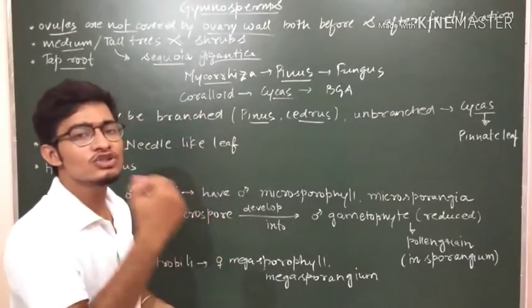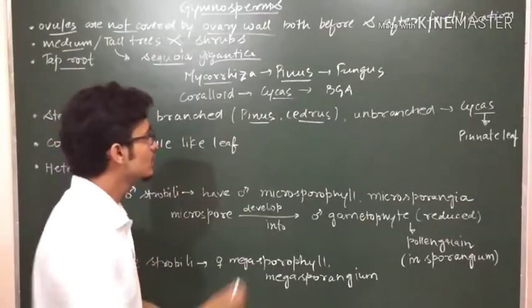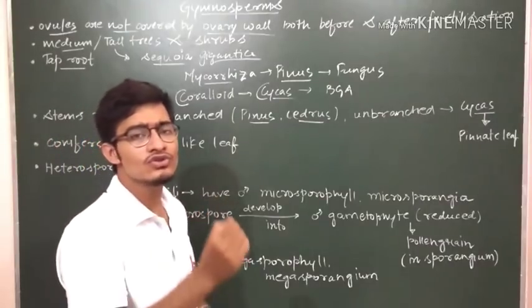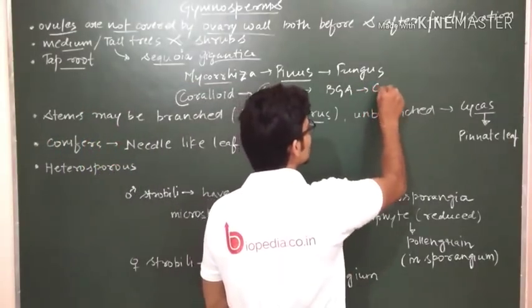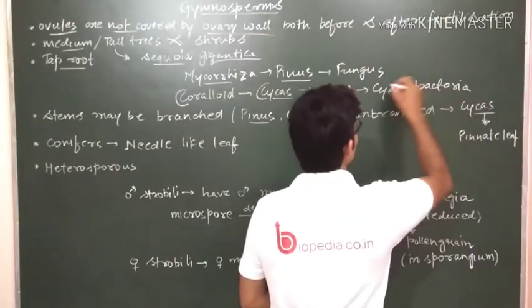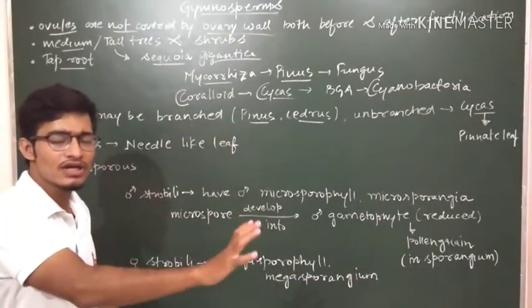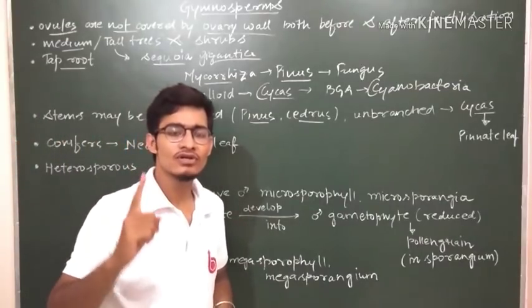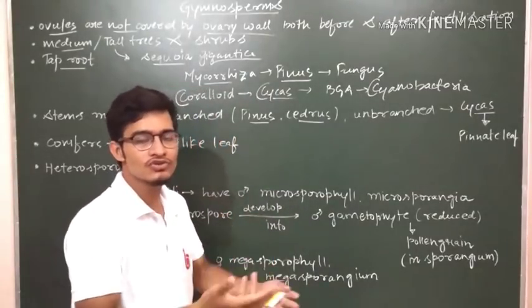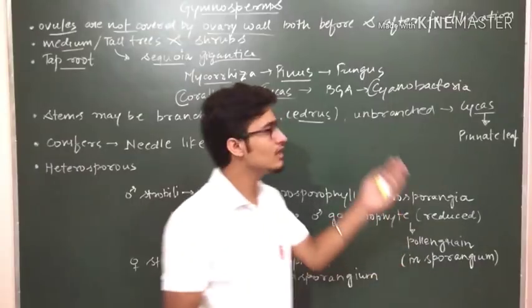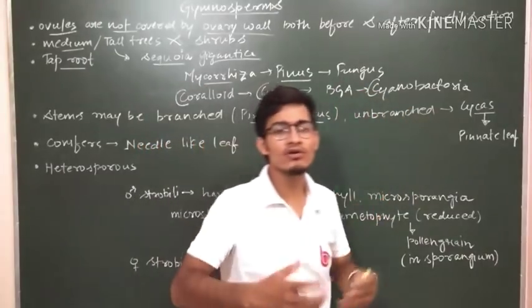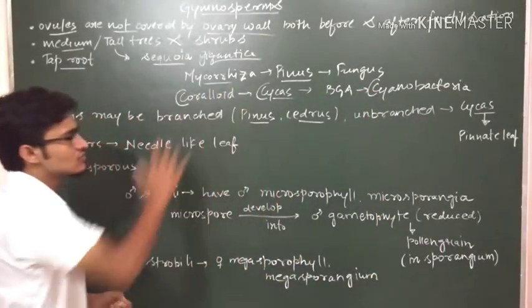It means that the plant Pinus roots will be associated with fungus and this association is known as mycorrhiza. In case of Cycus, there is another special association known as coraloid roots. C for Cycus, C for coraloid roots, which is the association of roots of Cycus with BGA which are also known as cyanobacteria, which are nitrogen fixation doing bacteria. They used to fix nitrogen.